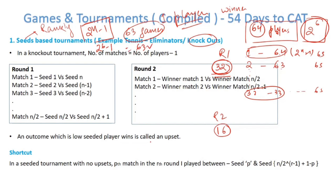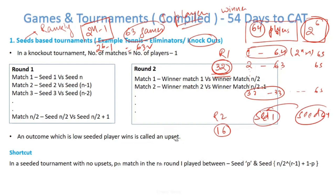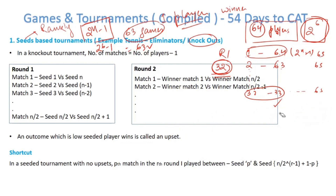There is something called an upset. Whenever a lower-seeded player beats a higher-seeded player — for example, if seed 64 beats seed 1 — it is called an upset. It is called an upset because people want seed 1 to win; there are more fans of seed 1. Therefore, when seed 1 gets beaten by seed 64 or any lower-ranked player, that is called an upset.